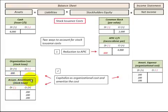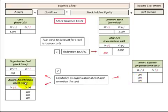As we amortize the stock issuance costs, we credit our accumulated amortization and recognize it as an expense on our income statement for the amortization of those expenses. The accumulated amortization will eventually reduce our organizational costs to zero, at which point we will have recognized all those organizational costs on our income statement.